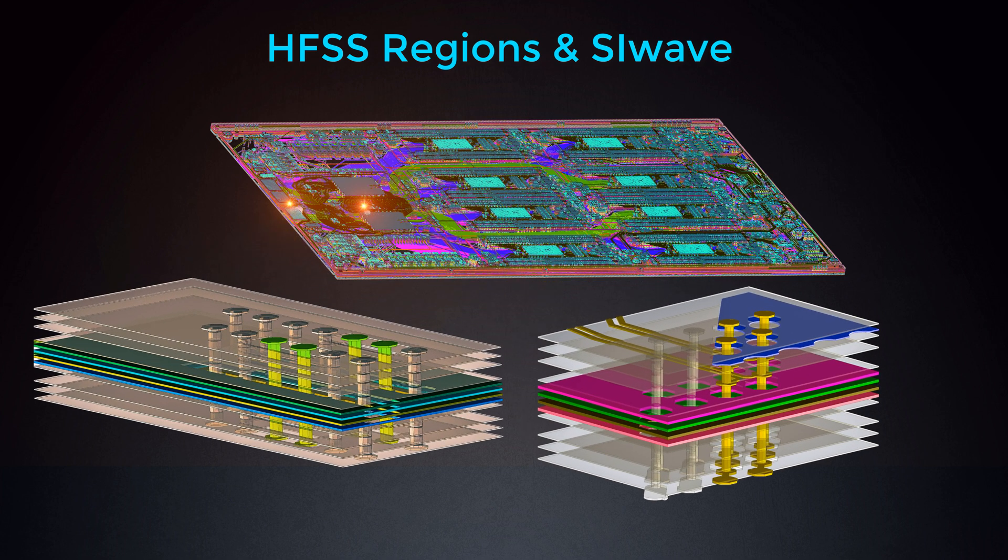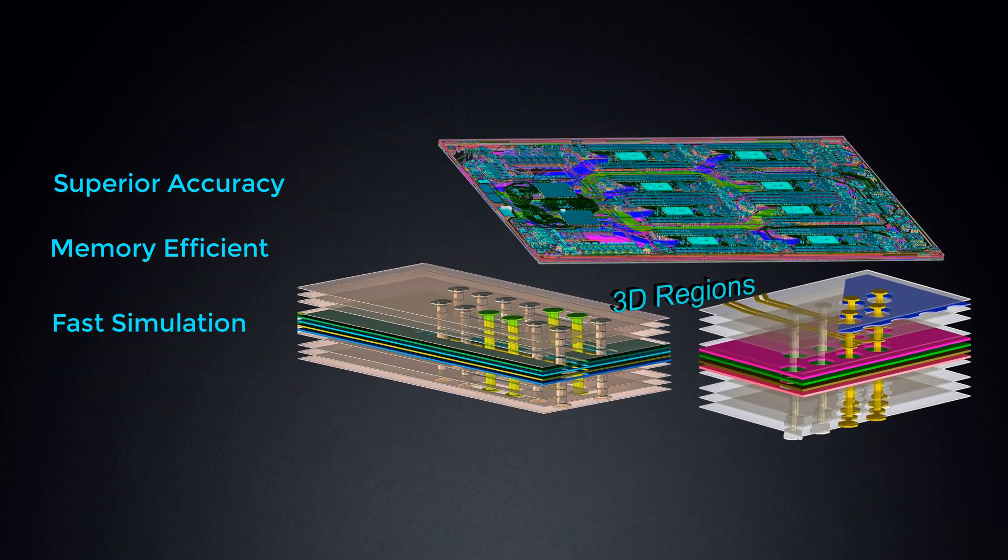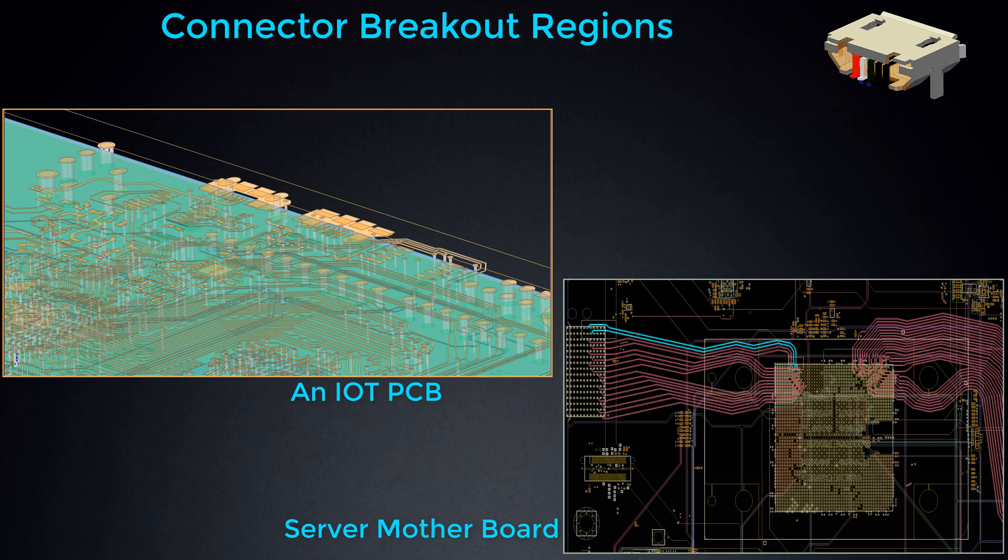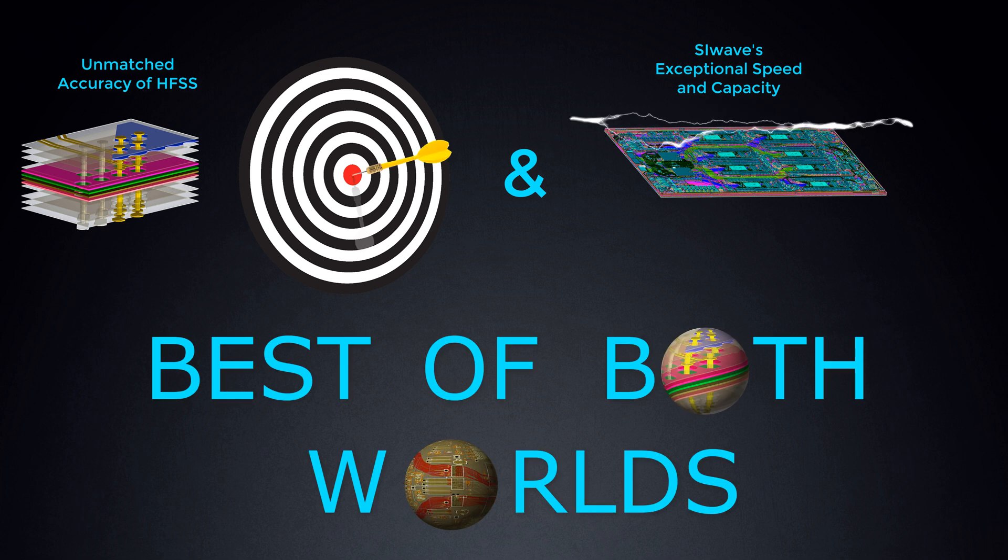A fast and memory-efficient solution in ANSYS SI-Wave that delivers superior accuracy for critical nets with 3D discontinuities. For sections of a signal line requiring precise 3D analysis, such as this connector land pattern, HFSS Regions gives you the unmatched accuracy of HFSS with SI-Wave's exceptional speed and capacity, so you get the best of both worlds.